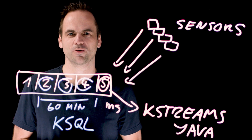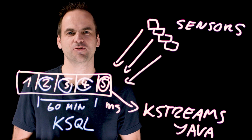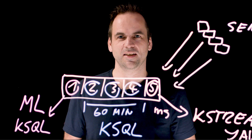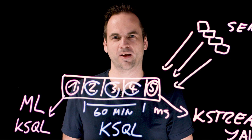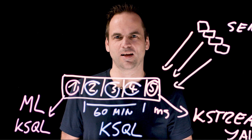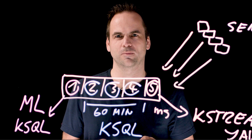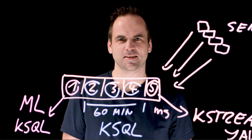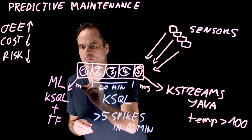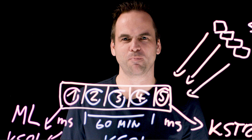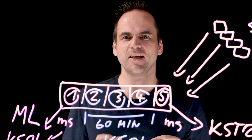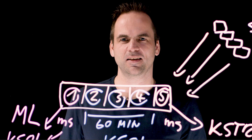Let's go even one step further — now we want to embed AI and machine learning into our streaming application. In this case, we are using TensorFlow or any other machine learning framework, and we embed it into our data streaming application. Once again using KSQL, we embed the TensorFlow model into this streaming application. So within milliseconds, we can do model scoring, which means that we do predictive maintenance while the data is hot in real time, close to the shop floor, so that we can really detect issues and send the alert to the mechanic.